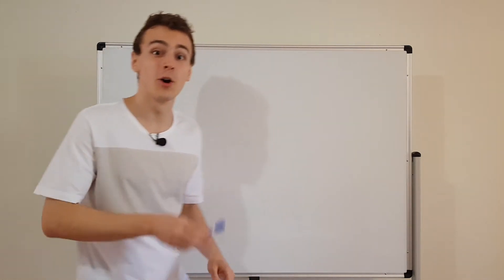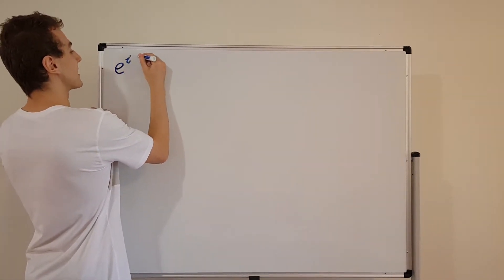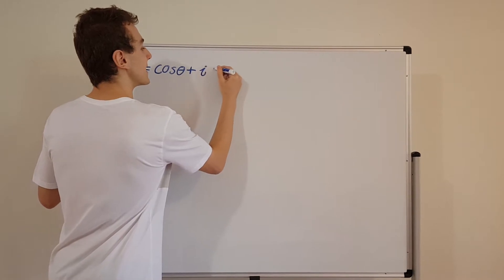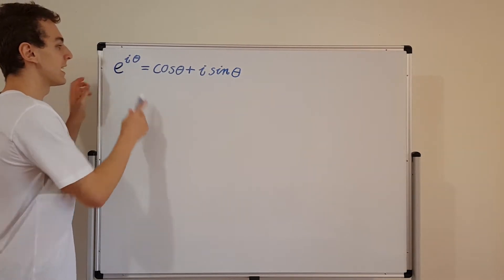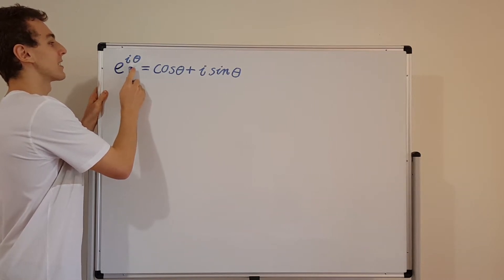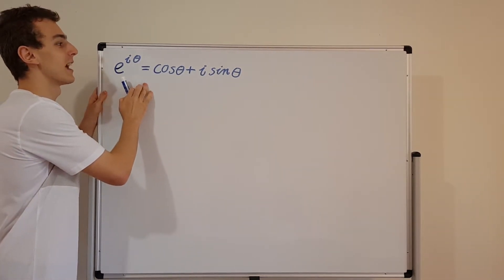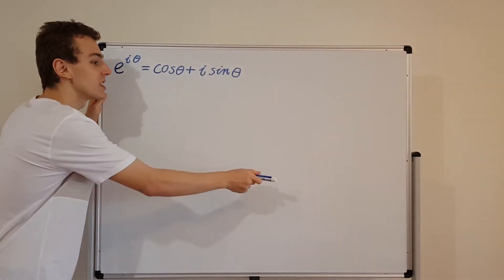Let's use Euler's formula to write cosine and sine in terms of complex exponentials. First, I'm going to write down Euler's formula. Euler's formula says that e to the i theta is the same as cosine of theta plus i sine theta. On the left hand side, we have a complex exponential, e to the i theta. There's an imaginary unit multiplying theta, and theta is some angle. This angle makes geometric sense when we draw it on the complex plane — it represents the angle up from the positive horizontal axis.